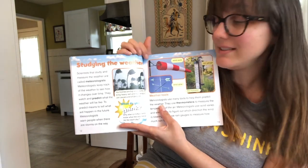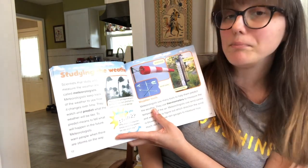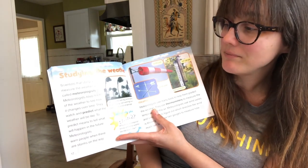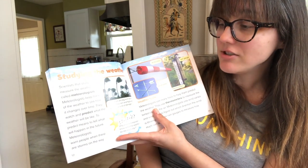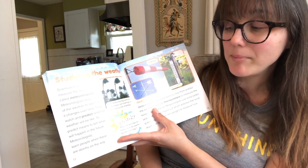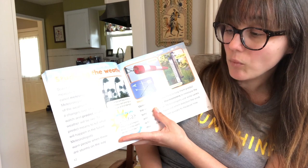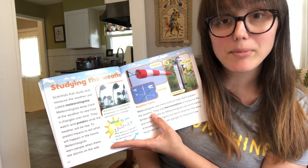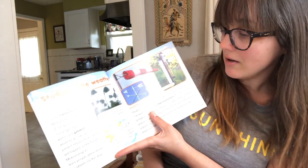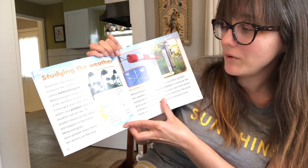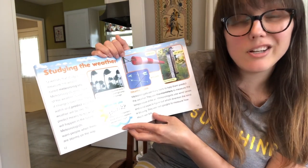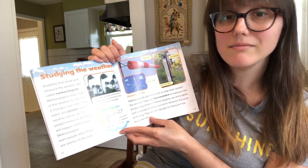Scientists that study and measure the weather are called meteorologists. Maybe you watch them on the news. Meteorologists keep track of the weather to see how it changes over time — they watch and predict what the weather will be like. To predict means to tell what will happen in the future. Meteorologists also warn people when there are storms on the way. We'll talk about hazardous weather in a future episode. Why else is it important to know what the weather will be like? Maybe so you know how to dress, or to bring an umbrella, or not to plan a picnic.